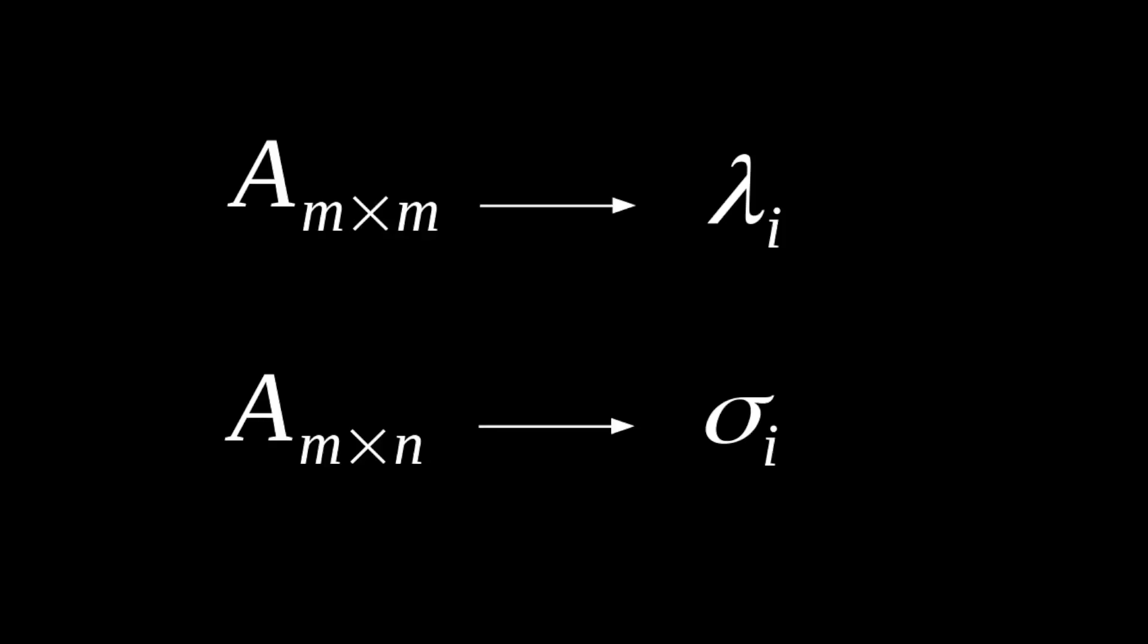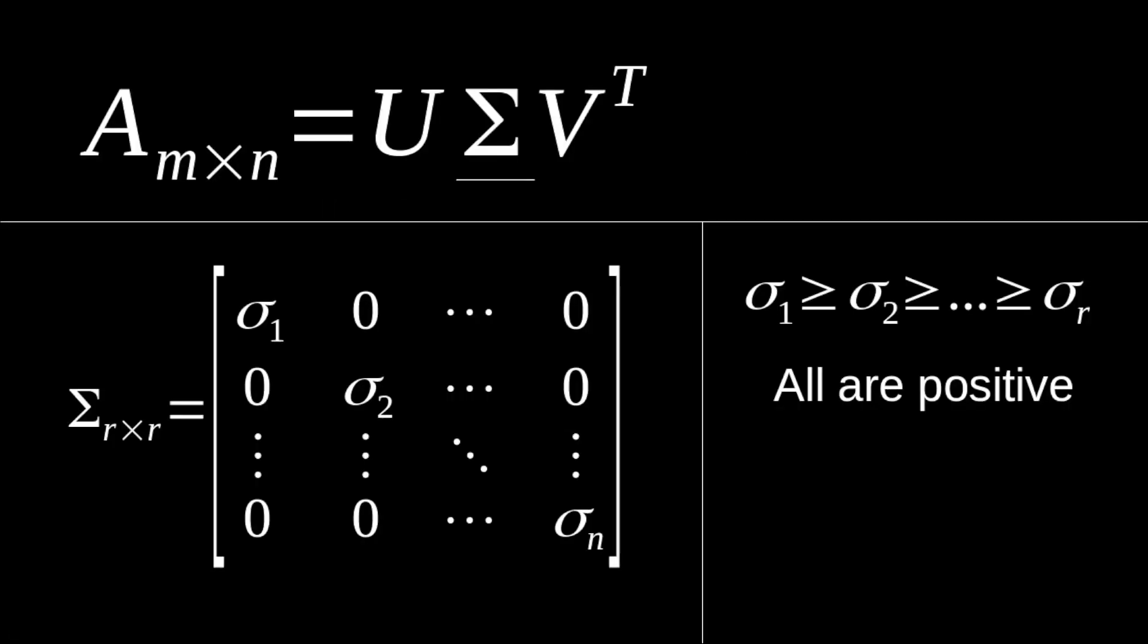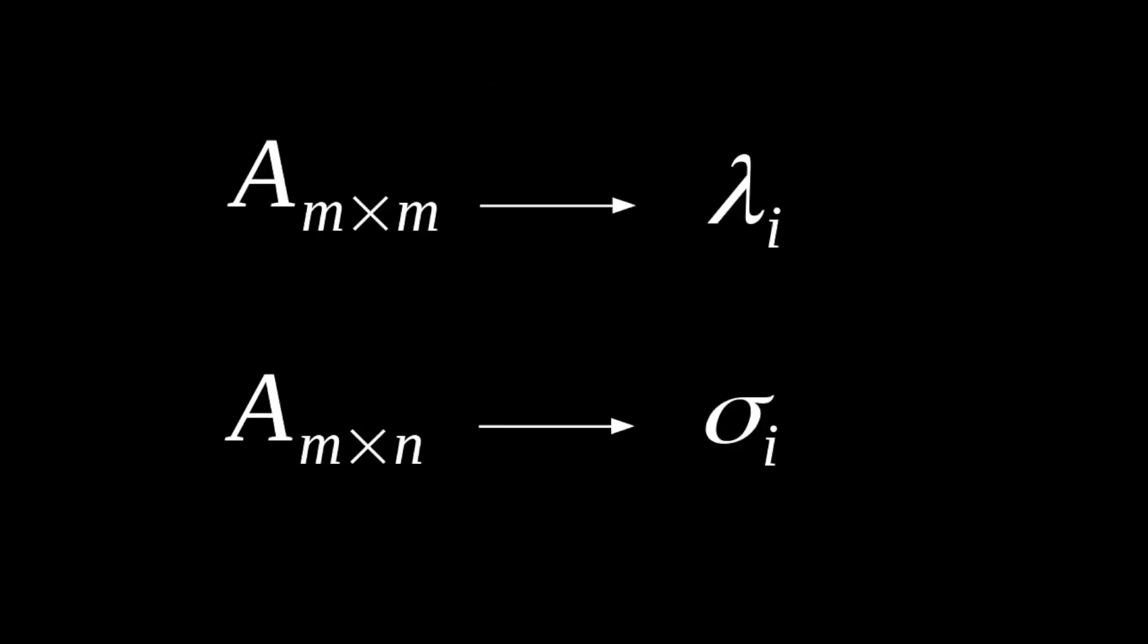The next best thing that we can compute that's analogous in a way to our eigenvalues are our singular values, which of course we get in this sigma matrix of our singular value decomposition. And so that's where we will start. We will start by figuring out how we can compute these singular values.